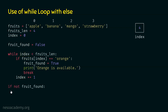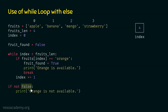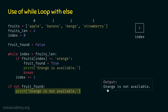After the while loop terminates, we check: if not fruit_found. We know fruit_found is false, so not false is true, and this condition is satisfied. Therefore, 'orange is not available' will be printed on the screen. This is the correct answer and what we want. Orange is indeed not available in this list, and that is what is printed.